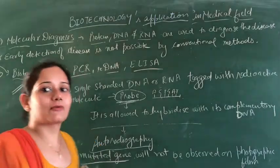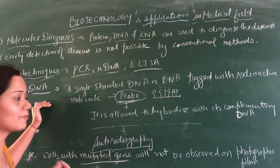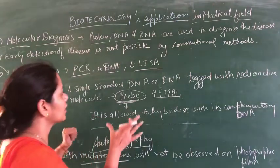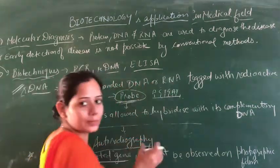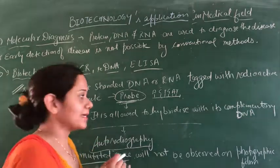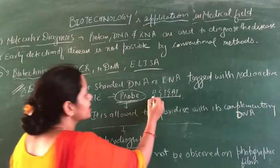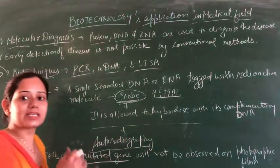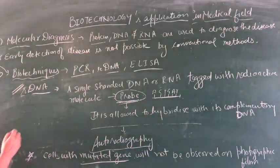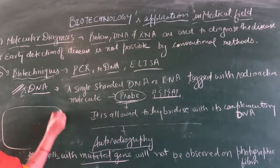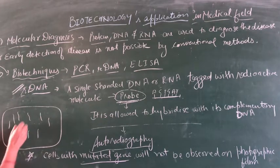The next technique is recombinant DNA technology, which is also helpful in disease diagnosis. In this technique, we use a probe — a single-stranded DNA or RNA molecule that is labeled radioactive. This probe is artificially synthesized in the lab, and its sequence is complementary to the DNA sequence we want to detect. We take a sample of DNA and make many fragments from it.